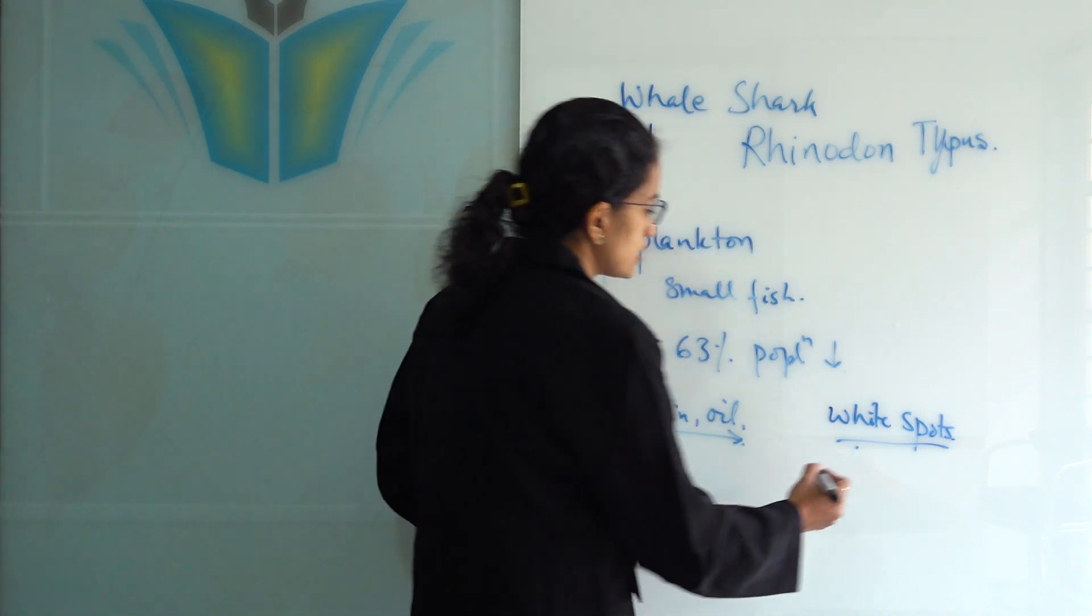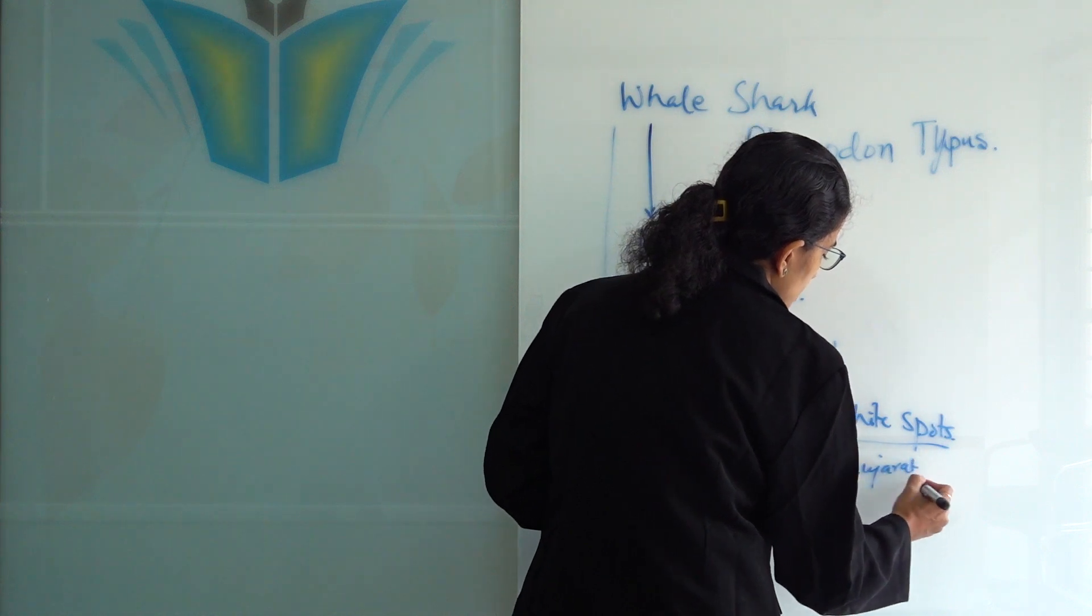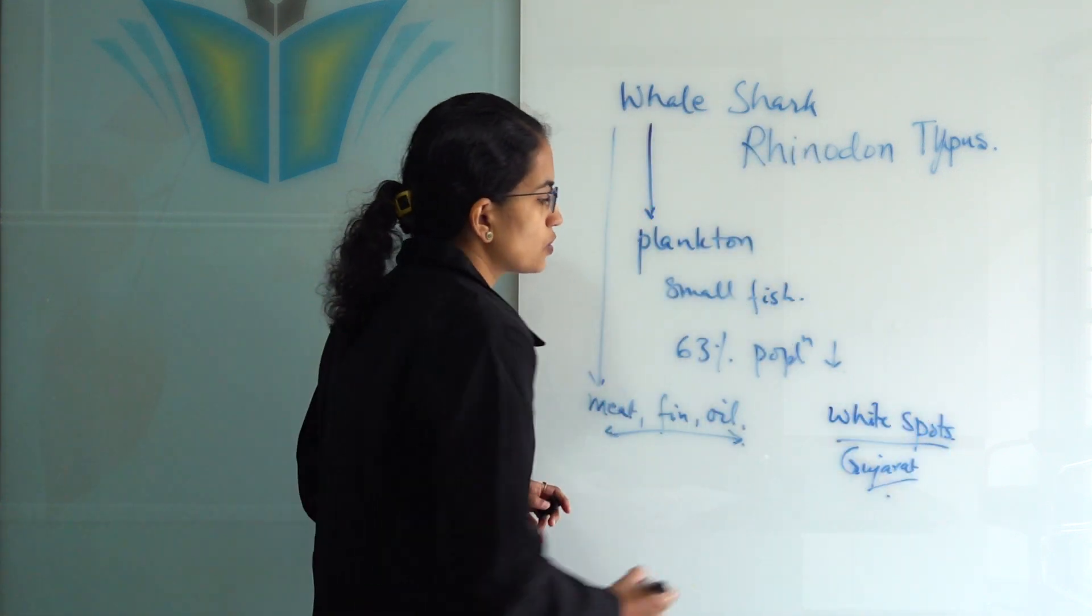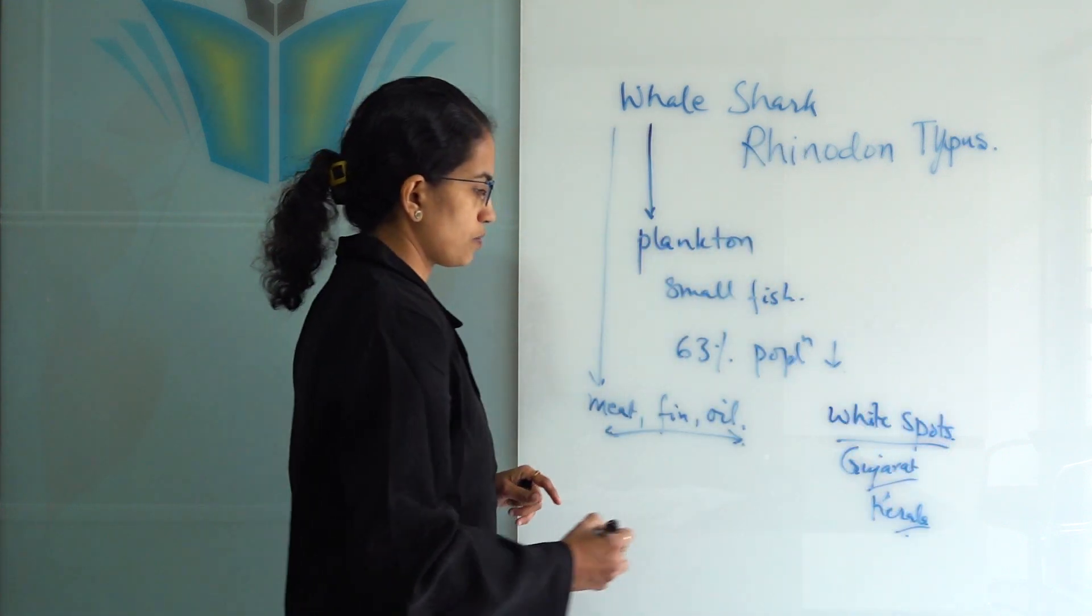In India, mainly in the regions of Gujarat, the highest population of this species is seen. Also, close to the regions of Kerala, whale shark populations are spotted.